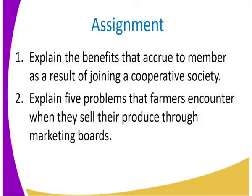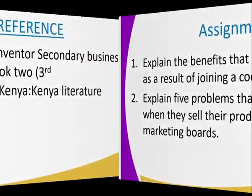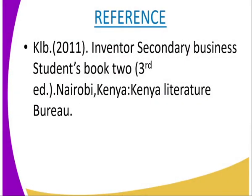Assignment: one, explain the benefits that accrue to members as a result of joining a cooperative society; two, explain five problems that farmers encounter when they sell their produce through marketing boards. Reference: KRB 2011, Inventor Secondary Business, Student Book 2, Third Edition.